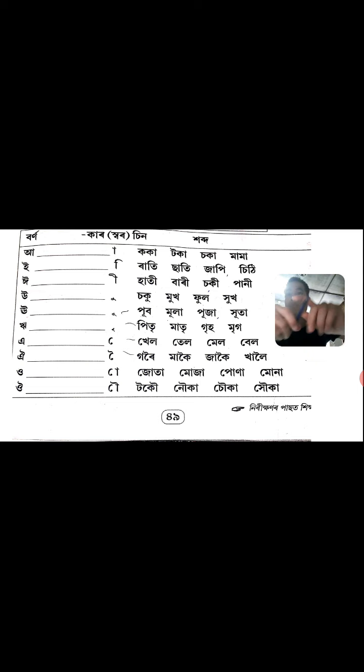O matra: Tokou, Noka, Choka, Hoka. So, dear students, these are the matras and words — they are examples of words.